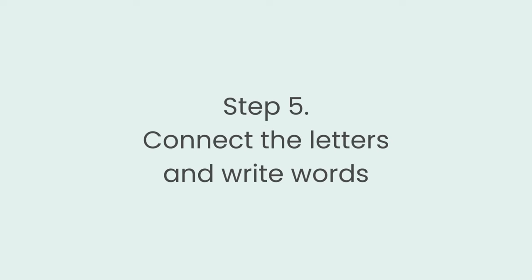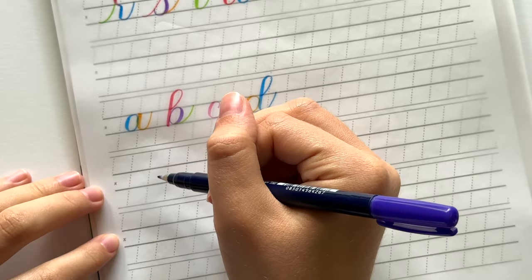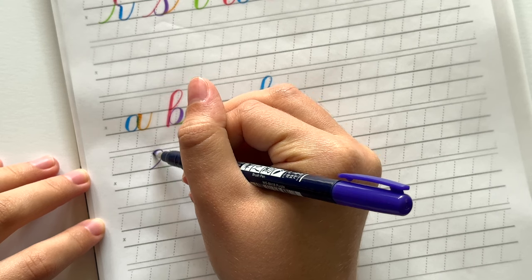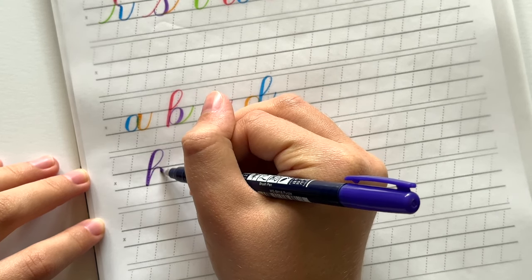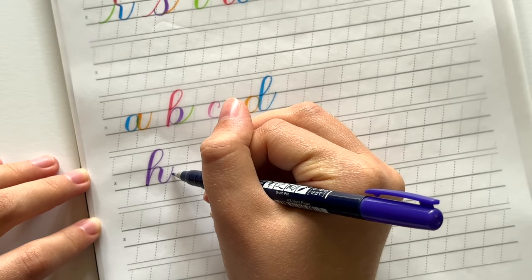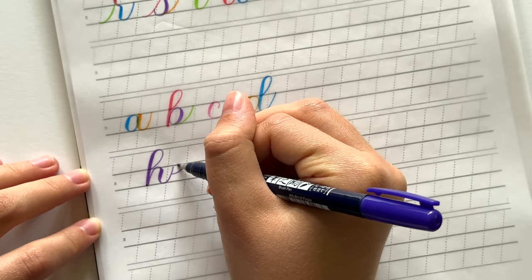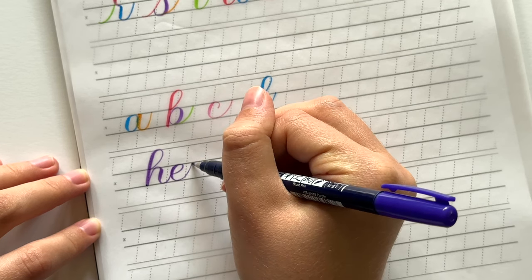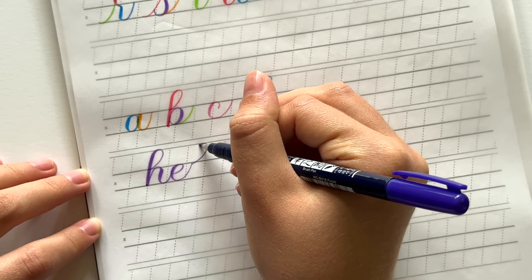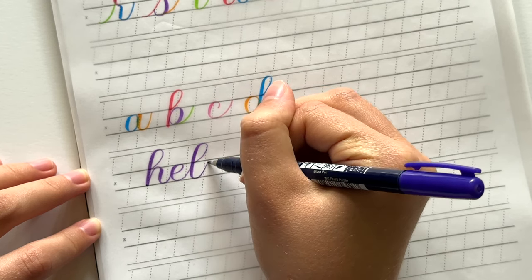The next step is to put all these letters together into words. So let's write the word hello. We'll start with the first letter h. And then when I write the next letter I'm going to write it so that it just overlaps the finishing stroke of the h. Same with the letter l. I'm going to write it so that the down stroke just overlaps the finishing stroke of the e.